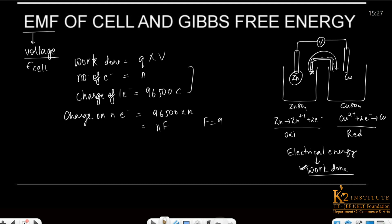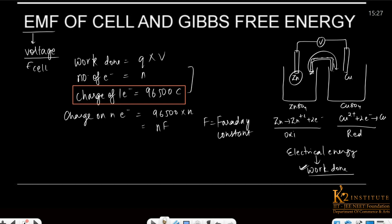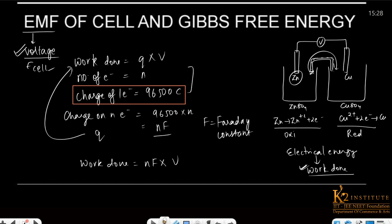So: charge on one electron is 96500. If a cell has n electrons being transferred, the charge on those n electrons equals nF. Now substituting this into the work done equation: work done = nF into V, and voltage V is what? It is E cell. So substituting V = E cell, work done can be written as nFE cell.